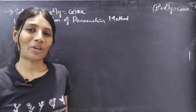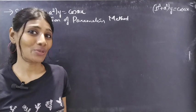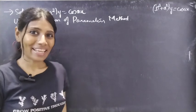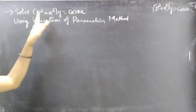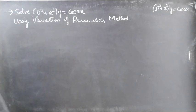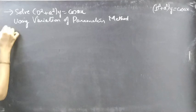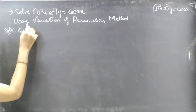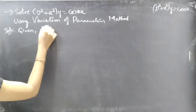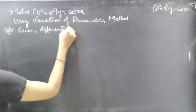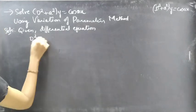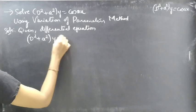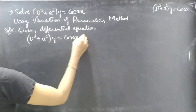Hello everyone, this is Vyakalpana. In this video we are going to solve a differential equation using the variation of parameters method, part 3. We are given the differential equation: d squared plus a squared into y equals cos ax.